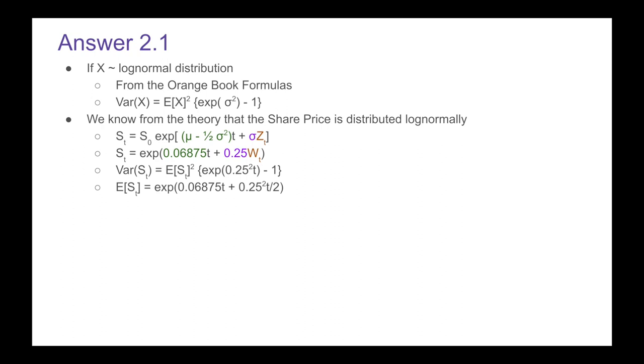This means we first need to look at the expected value of the share price at time t, which is given by the following formula. We know that t is going to be four because the CEO is retiring in four years time, and we get 1.49182.